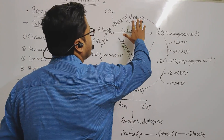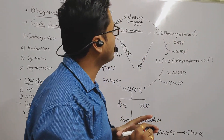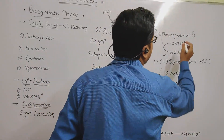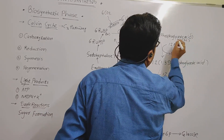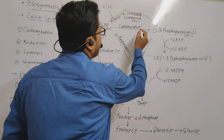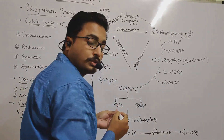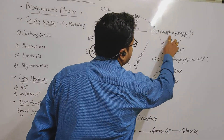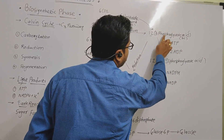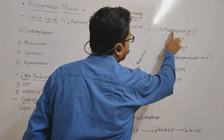The first stable product in the case of the Calvin cycle is 3-phosphoglyceric acid (3-PGA). One molecule of 3-PGA contains 3 carbons. How many molecules of 3-PGA are formed? That is 12 molecules of 3-PGA. This completes the process of carboxylation. After carboxylation, the second step is the process of reduction.